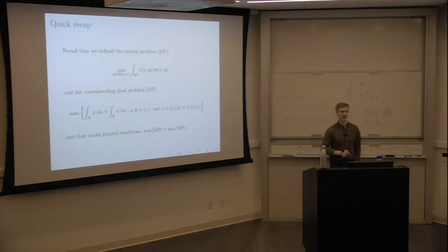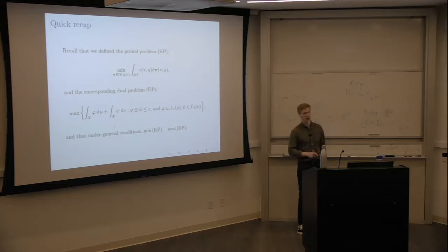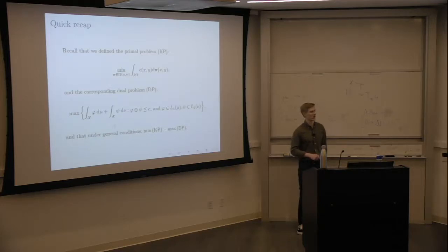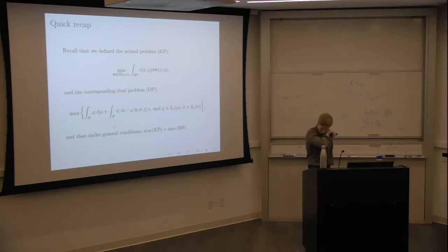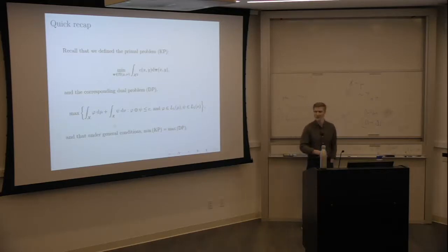Here's the recap. Recall the primal problem — this is where we started, the problem that Kantorovich formulated. We spent some time thinking about the corresponding dual problem, which is a maximization problem that achieves at its maximum the same value as the primal problem. This gives us two angles of attack when trying to calculate these values. You can already see that this looks difficult to compute in practice: you have to do integration with respect to complicated measures, and maximize over a set of L1 functions with constraints. So we have to start with something easier.